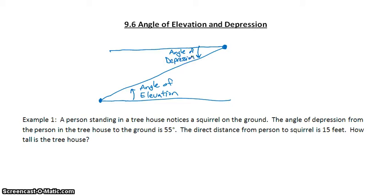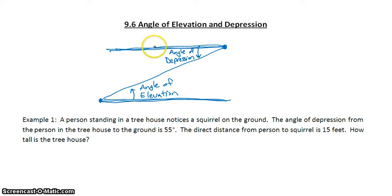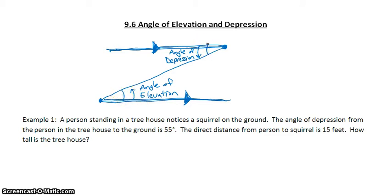Now if you notice, the ground and the horizon line are parallel to each other, which means that the angle of elevation and the angle of depression are alternate interior angles — they're different angles, but they are congruent to each other.